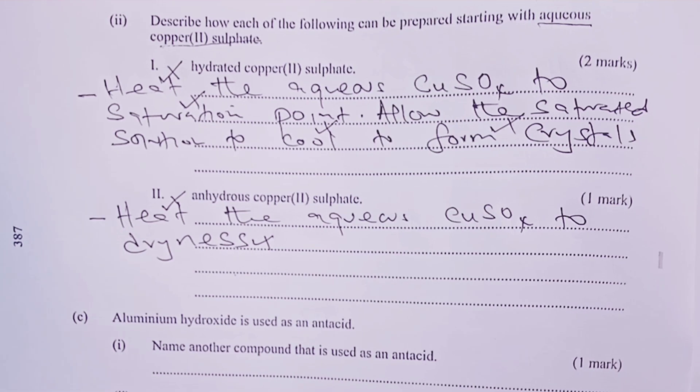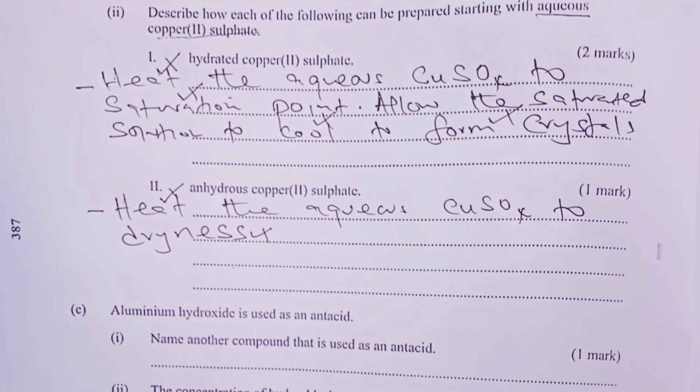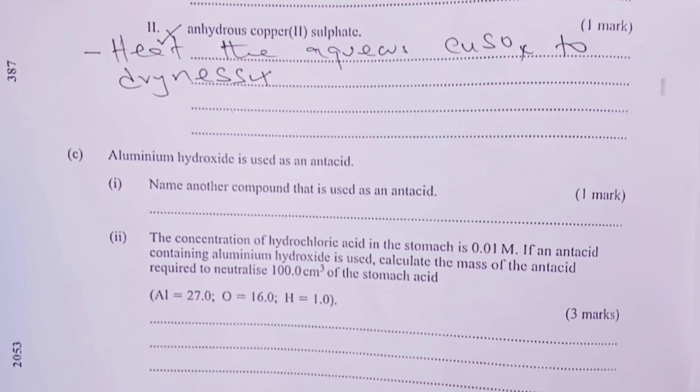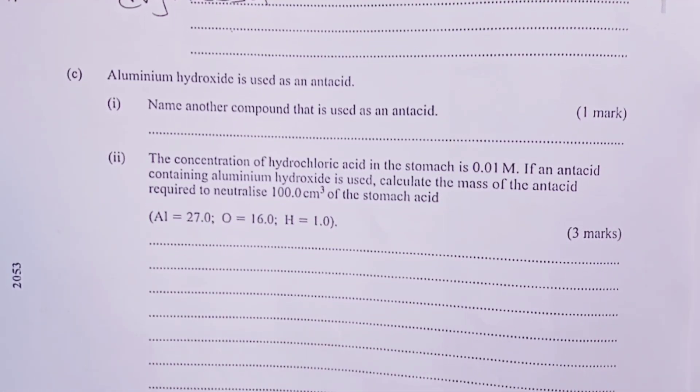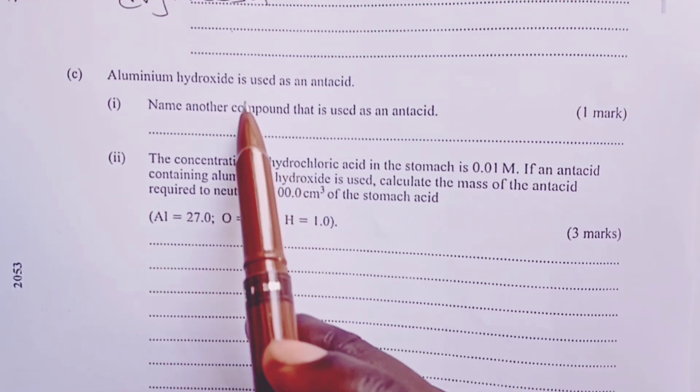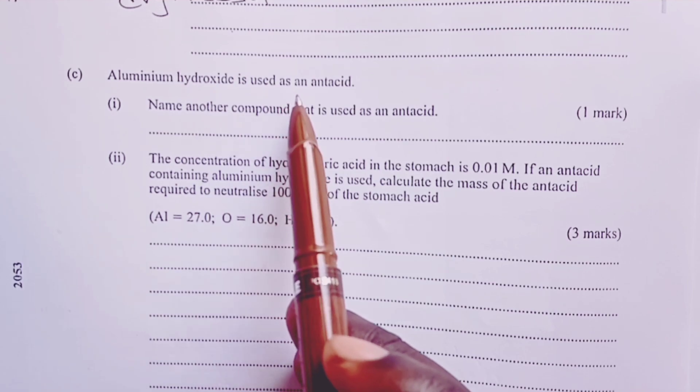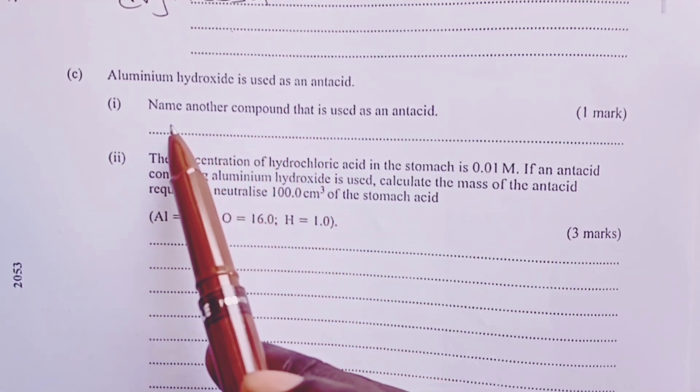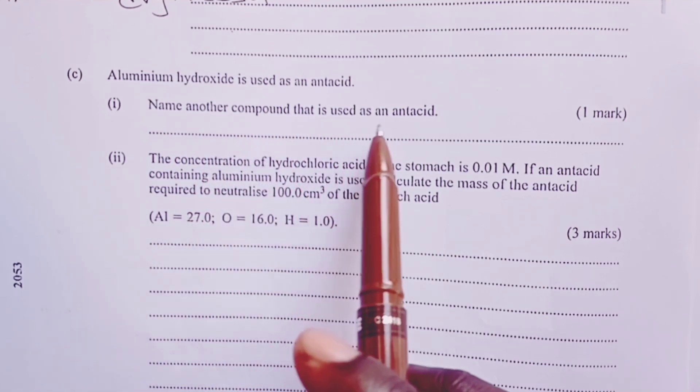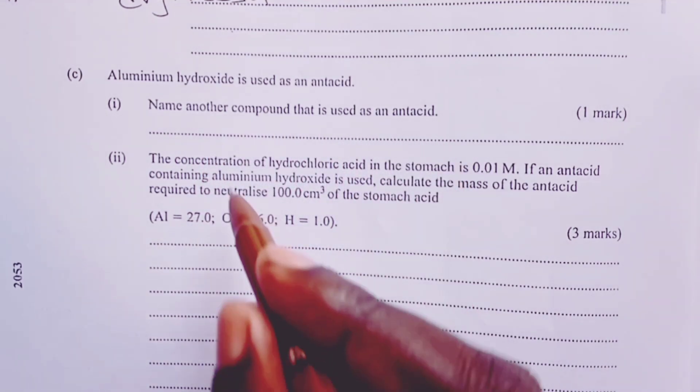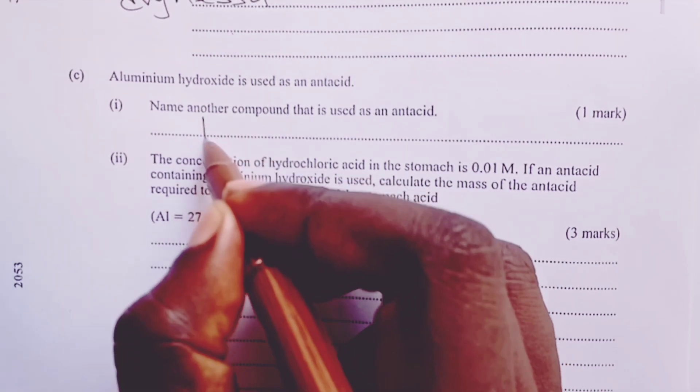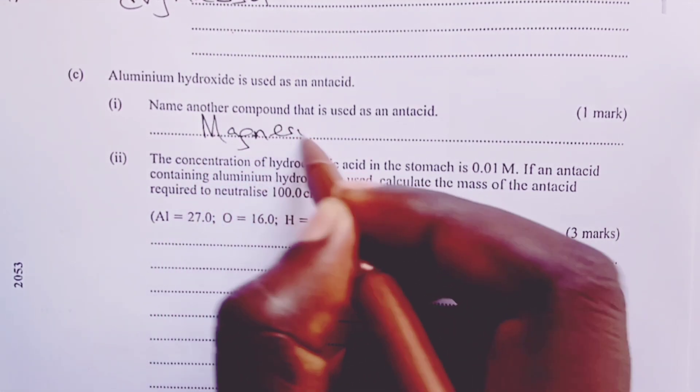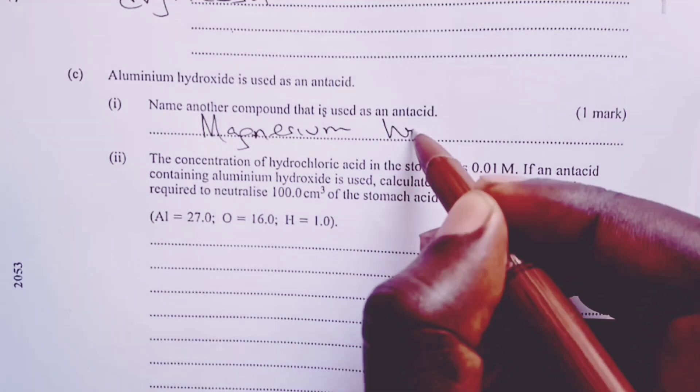To part C, which is the last part of question 7. We are told, aluminium hydroxide is used as an antacid. We are told to name another compound that can be used as an antacid. This is magnesium hydroxide.